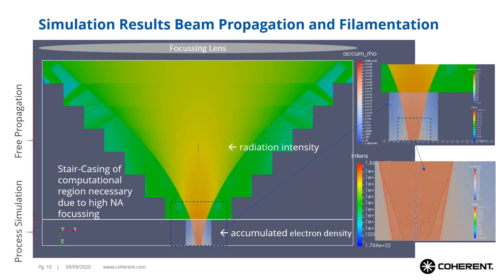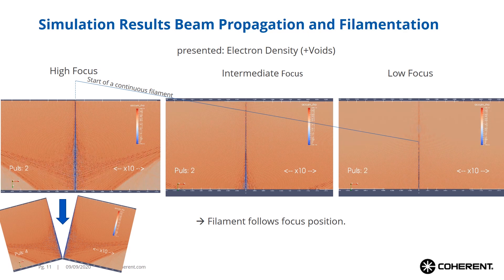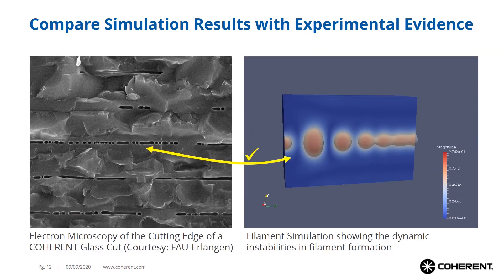Since filament optics are special optics that do not create an elementary Gaussian beam, you need to describe the free space propagation before the actual process simulation inside the glass volume. The intensity field of the free propagating beam as well as the electron density generated by the beam inside the material are shown here. We also have a detailed look at the electron density distribution inside the material, and see how voids are formed by each pulse along the filament line, ultimately leading to easy cleaving along the cut contour. Varying the focal position of the incoming beam shows how the filament follows this focal position.